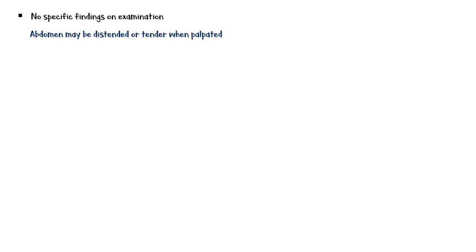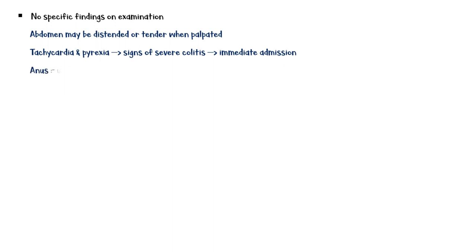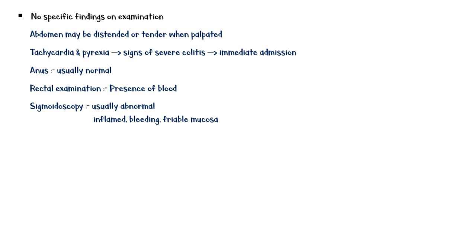In general, there are no specific findings on examination. The abdomen may be distended or tender when palpated. Tachycardia and pyrexia are signs of severe colitis and require immediate admission. The anal opening is usually normal, and rectal examination may reveal the presence of blood. Sigmoidoscopy is usually abnormal, showing an inflamed, bleeding, friable mucosa.